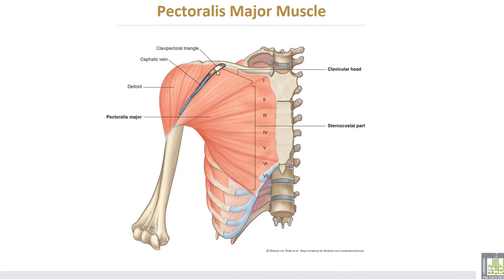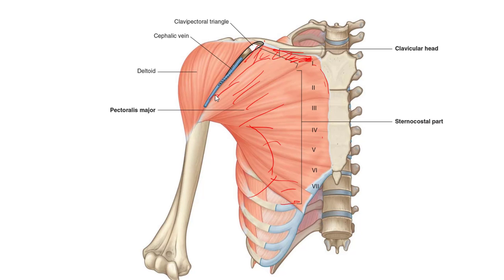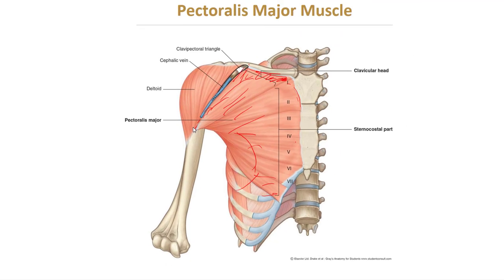This is the pectoralis major muscle. The clavicular head arises from the medial half of the clavicle, and the sternocostal head arises from the front of the sternum and upper six costal cartilages. The pectoralis major is inserted into the lateral lip of the bicipital groove of the humerus.